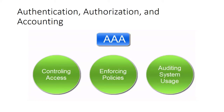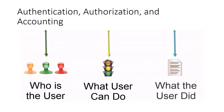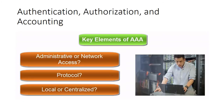AAA gently controls access to computer resources, enforcing policies and auditing system usage. In different terms, authentication determines which user wants to access the network, authorization determines what the user can do, and accounting keeps a log of what the user did during their session. AAA plays a part in almost every way we access networks today, and it is very important that the security analyst understands what AAA is and how it operates.